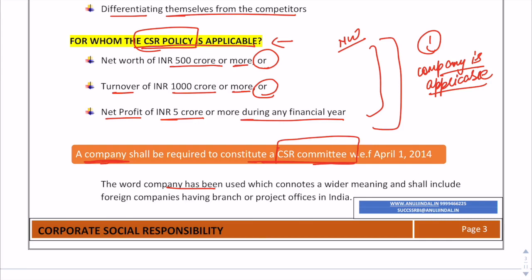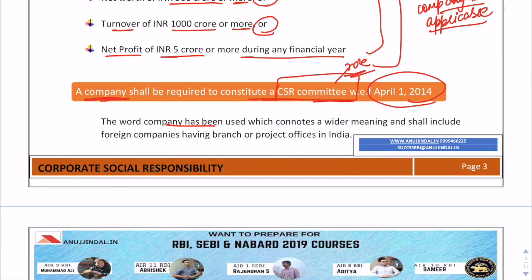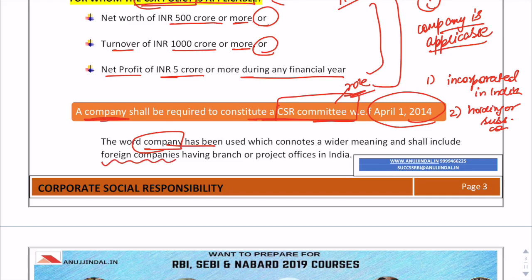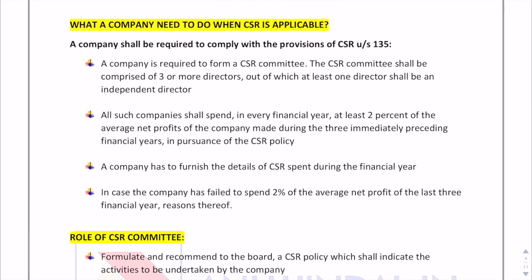If any of the three criteria is met, that company shall constitute a CSR committee with effect from April 1, 2014. The term 'company' here includes a company incorporated in India, its holding or any subsidiary company, and — importantly — any foreign company having branch offices in India. This has widened the ambit for companies to come under the CSR policy.